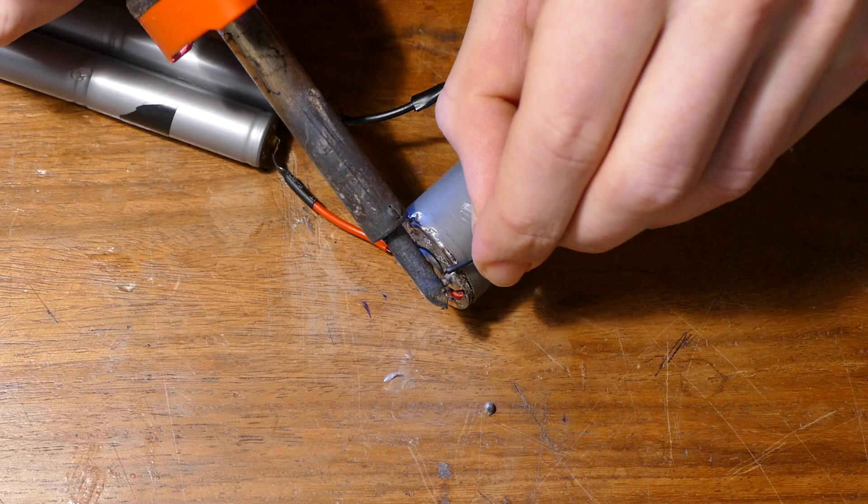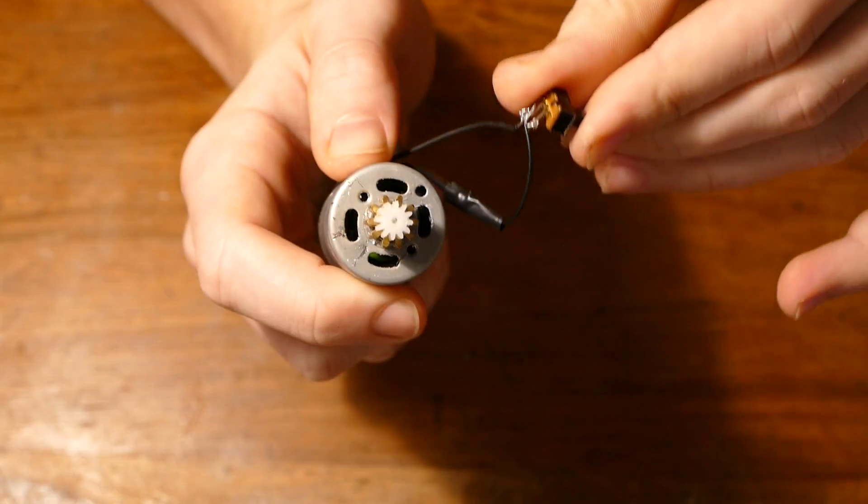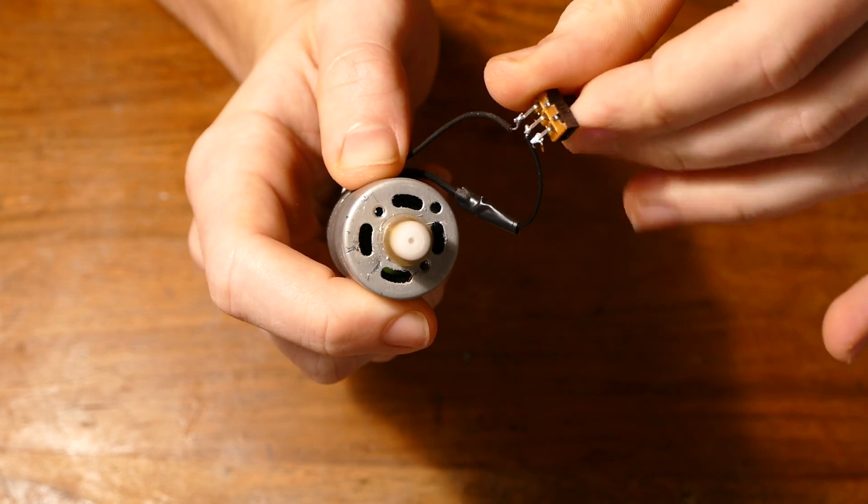Now solder the other lead of the battery to the motor, and you're done with the wiring. That's all there is to it. When we flip the switch, the motor should turn on.